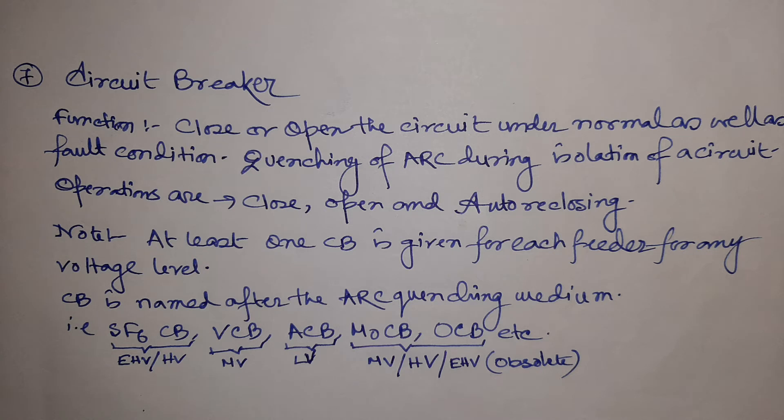The next equipment is the circuit breaker. Its function is to close or open the circuit under normal as well as fault conditions. Circuit breakers can operate under both conditions. The main purpose is quenching of the arc during isolation of the circuit. The arc-quenching medium determines the type of circuit breaker — SF6, vacuum circuit breaker (VCB), air circuit breaker (ACB), minimum oil circuit breaker (MOCB), or oil circuit breaker (OCB).